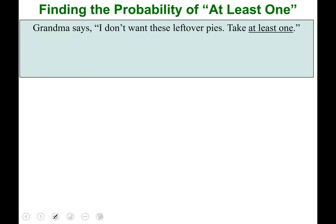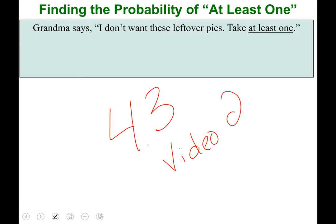Hello statistics students, my name is Jamie Aimee. This video is our discussion on section 4.3 — specifically, this would be video two of two. If you're looking for the beginning of section 4.3, you'll want to find the video done right before this one. This video picks up halfway through section 4.3 and it's on finding the probability of the concept 'at least one.'